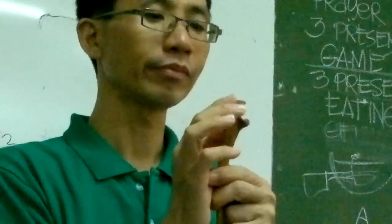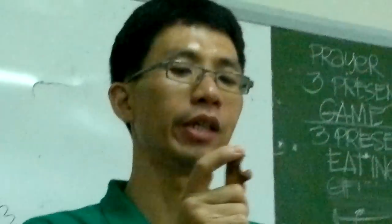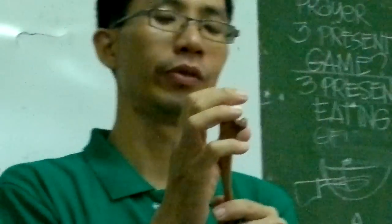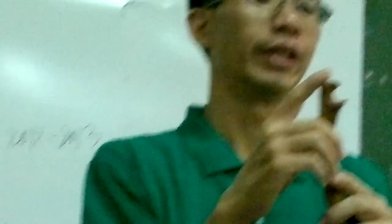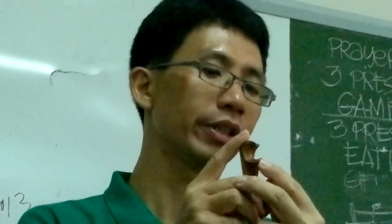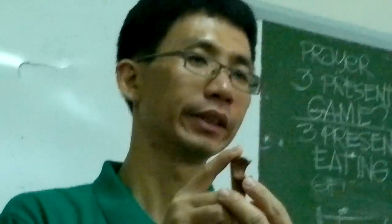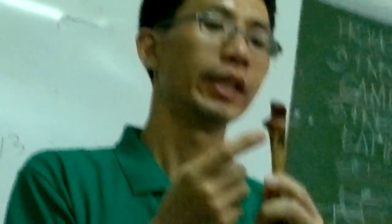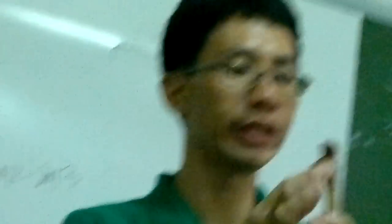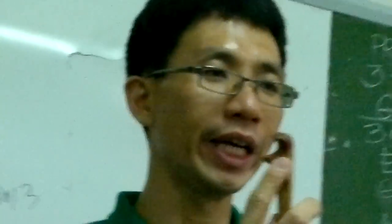Behind the trochlear notch, we move on to the posterior. We call this part the olecranon process of the ulna. Then, below the trochlear notch, we have the coronary process — the coronary process of the ulna. Then, laterally, we call this notch the radial notch. So, we have the radial notch.